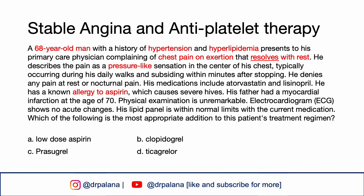A 68-year-old man with history of hypertension and hyperlipidemia presents to his primary care physician complaining of chest pain on exertion that resolves with rest. He describes the pain as a pressure-like sensation in the center of his chest, typically occurring during his daily walks and subsiding within minutes after stopping. He denies any pain at rest or nocturnal pain. His medications include atorvastatin and lisinopril. He has a known allergy to aspirin, which causes severe hives. His father had MI at the age of 70, physical examination is unremarkable, EKG shows no acute changes, and his lipid panel is within normal limits. Which of the following is the most appropriate addition to the patient's treatment regimen?